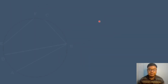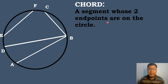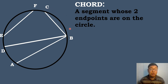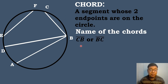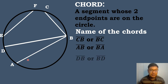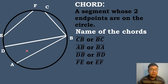A chord is a segment whose two endpoints are on the circle. In this figure, we have four chords located on the circle. We can name a chord using the two endpoints of the segment. For example, we have segment CB or segment BC, segment AB or segment BA, segment DB or segment EB, and segment FE or segment EF.